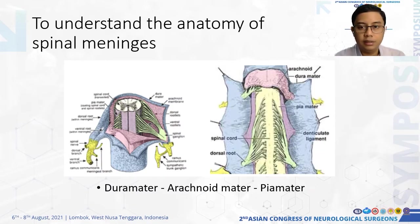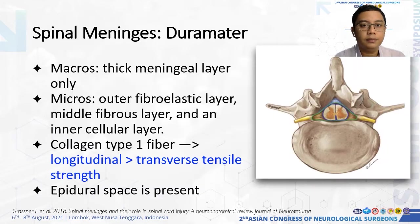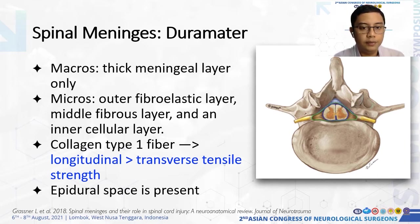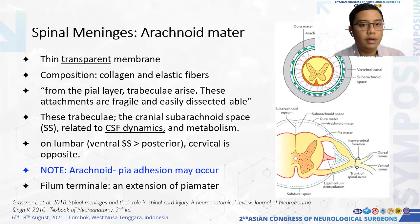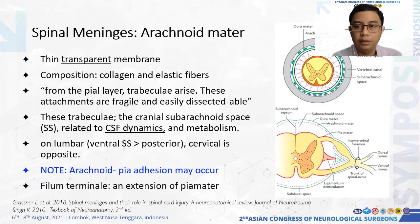Understanding the anatomy of the spinal meninges is important. It consists of the dura mater, arachnoid mater, and pia mater. The dura mater is a thick, strong layer with transverse tensile strength, which is why we can dissect it with double forceps rather than cutting end to end. Epidural space is present, making the spinal side different from the cranial side. The arachnoid mater is a thin, transparent membrane consisting of collagen elastic fibers and CSF trabeculae. Importantly, arachnoid and pia adhesion may occur, especially at the conus level. The filum terminale, usually an extension of the pia mater, is the typical site of ependymoma.